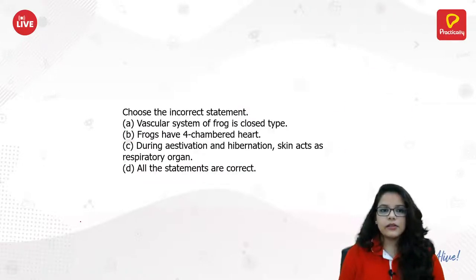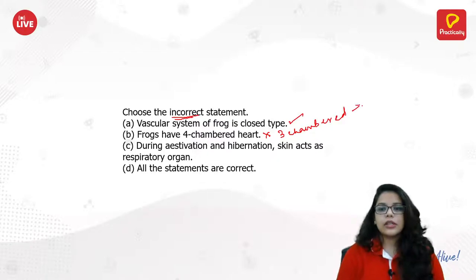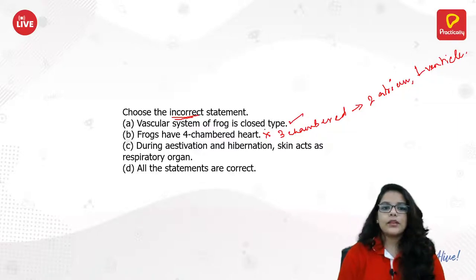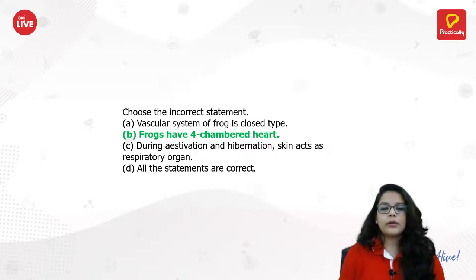Choose the incorrect statement: The vascular system of frogs is closed type — that is correct. Frogs have a four-chambered heart — this is incorrect; they have a three-chambered heart with two atria and one ventricle. During aestivation and hibernation, skin acts as the respiratory organ — that is true. So the incorrect statement is that frogs have a four-chambered heart.